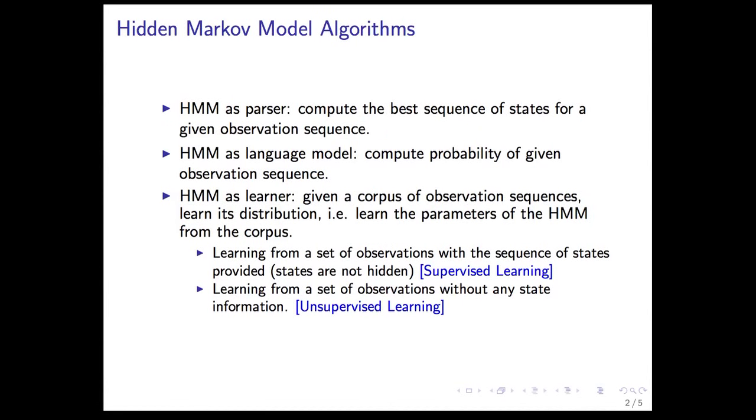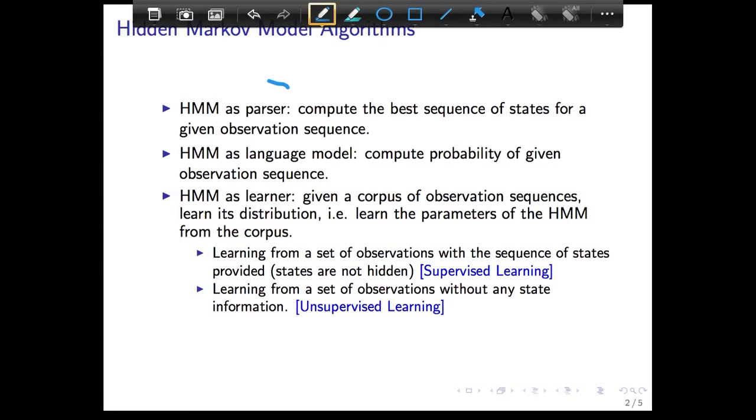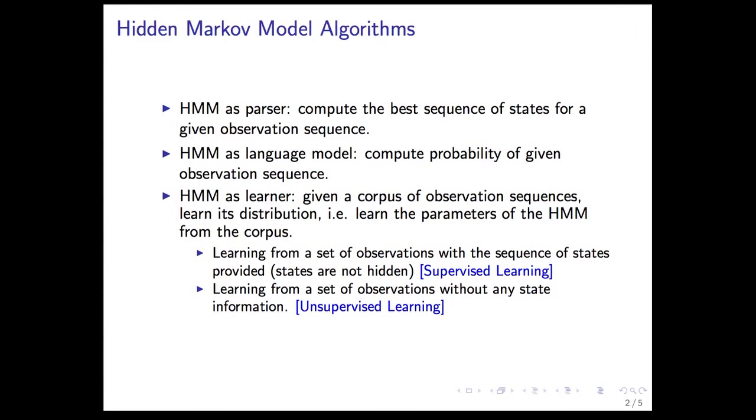And there are several HMM algorithms, and in this module, we're going to look at the first one. We're going to look at HMM as a parser. And what we want to do is to compute the best sequence of states for a given observation sequence. So if I give an input which is ambiguous, we want it to find the most likely sequence of states, which presumably matches our intuition about the ambiguity.